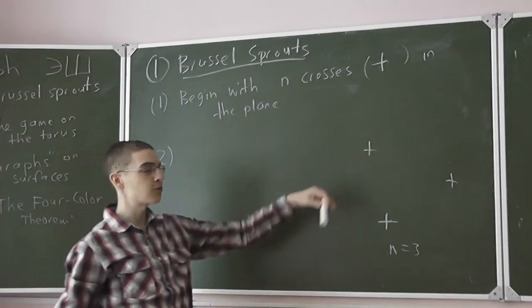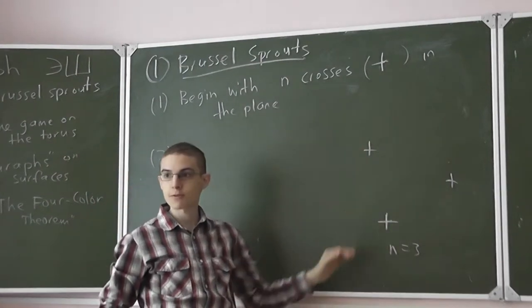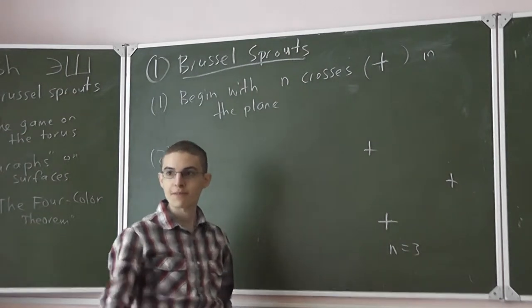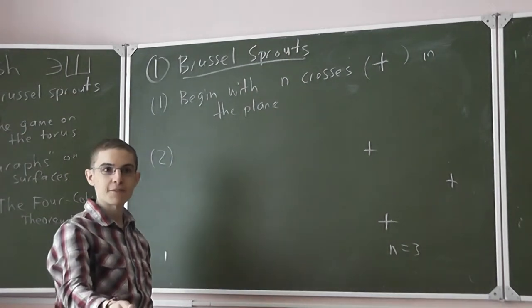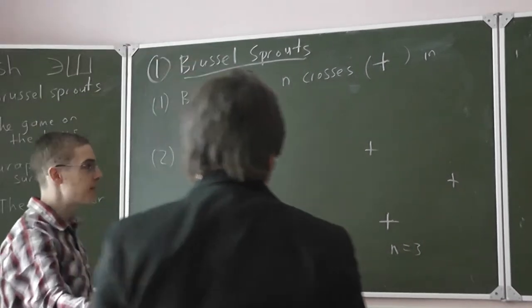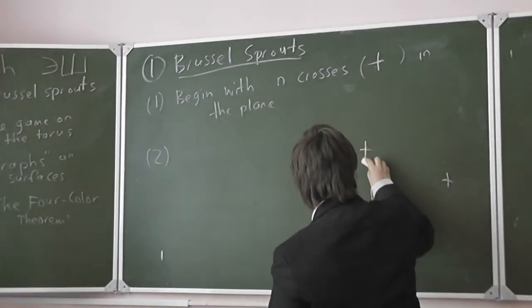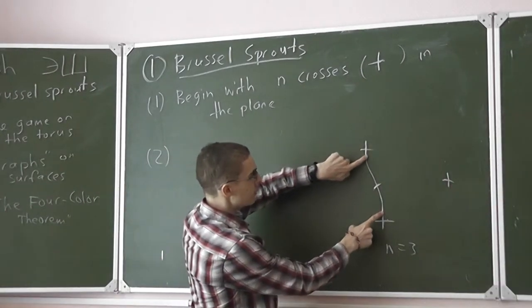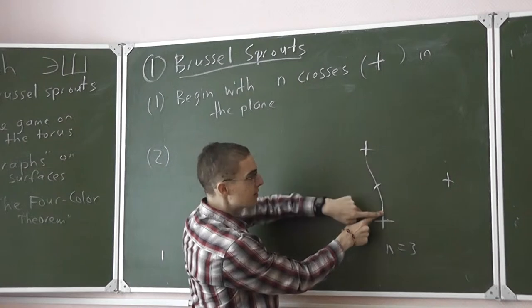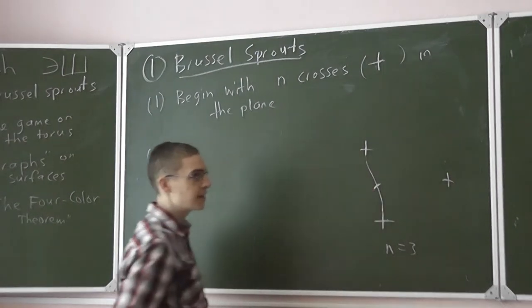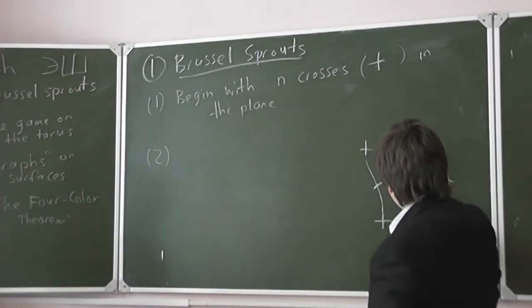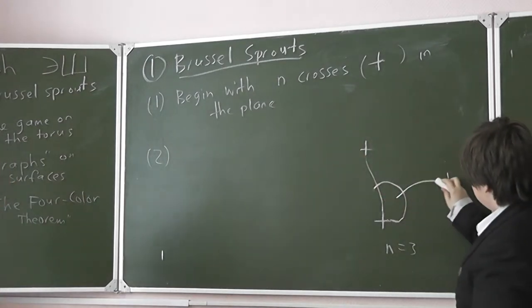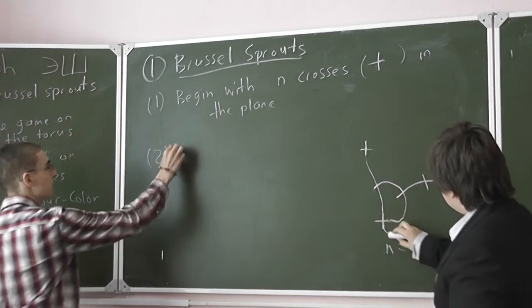Well, in the game Brussels sprouts, we have some crosses, what do we then do? Nicolai, you can play a little game. Good, so Nicolai connects two, two ends, or two arms of a cross together, and then he puts a dash halfway through. And you can give us one more move. Excellent. So, each player...